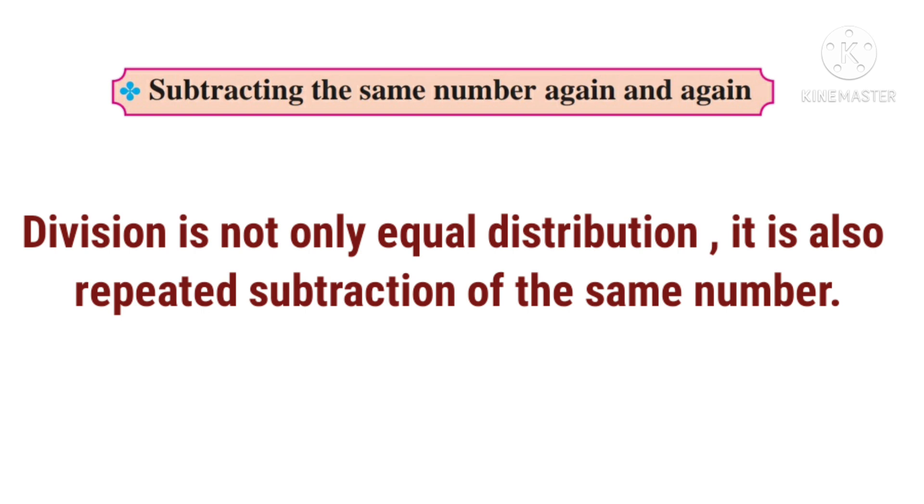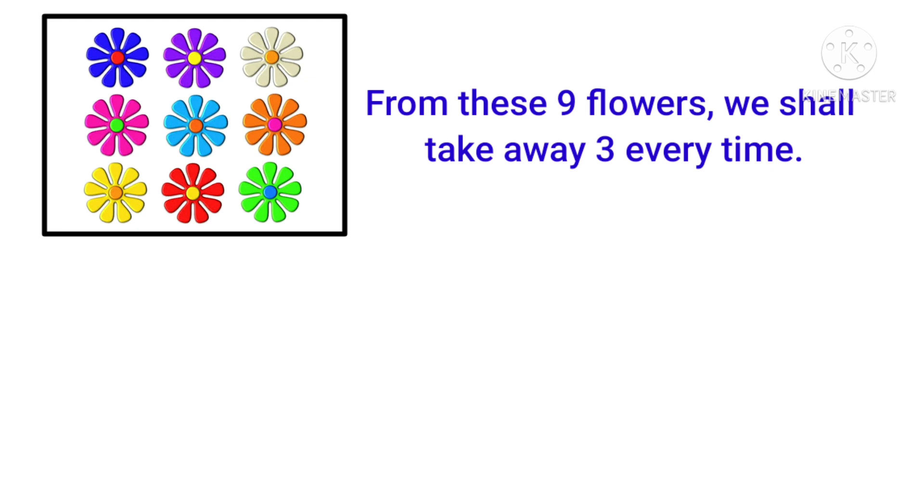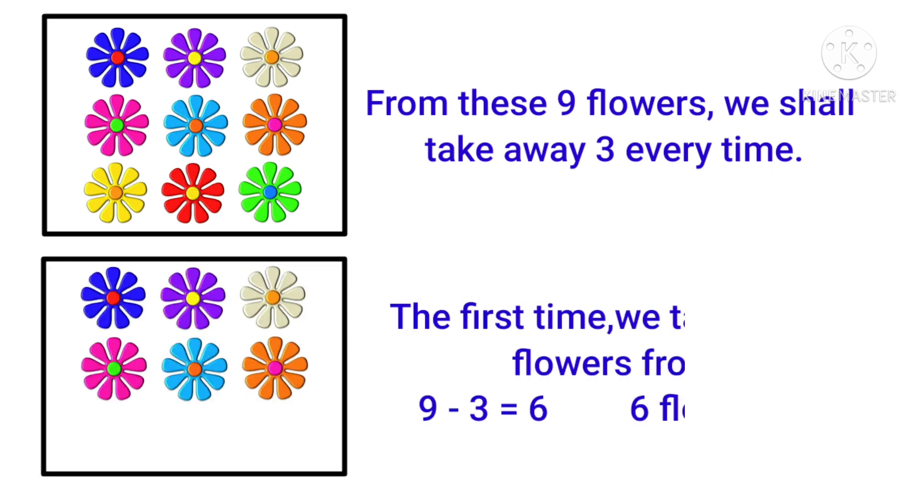Let us find out how is it with this example. Here are 9 flowers. From these 9 flowers, we shall take away 3 flowers every time. The first time we take away 3 flowers from 9. So 9 minus 3 is equal to 6. 6 flowers are left.